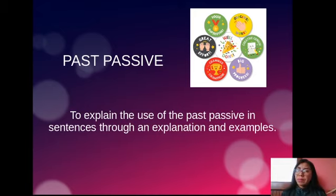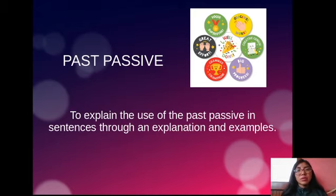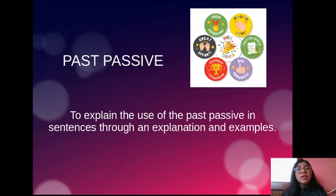Do you remember? So can you tell me the structure of it? We are going to use the subject, the verb to be, the main verb in the past participle form, and the agent or the complement. For example: 'The cell phone is bought by my mother.' I am using the sentence with the correct structure of the present passive voice.